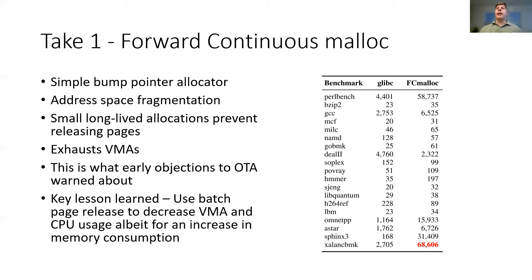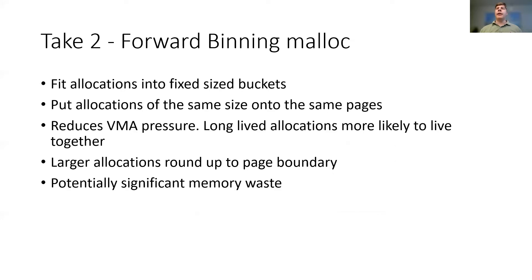By default, an application is limited to 64,000 VMAs, and exhaustion can prevent mapping or even unmapping additional address space. To address this, we added batch unmapping of pages so that a minimum run of pages needed to be freed before releasing. This significantly reduced CPU overhead as well as ameliorating the VMA exhaustion problem. Our second attempt at an OTA was the Forward Binning Allocator, FBMalloc, which only allocated memory in one of several fixed sizes, commonly referred to as a BBOP allocator. This model reduced VMA pressure in benchmark applications by co-locating small long-lived allocations of the same size on the same set of pages. However, since allocations had to be rounded up to the next fixed size bin, there was additional memory pressure from this over-allocation waste.